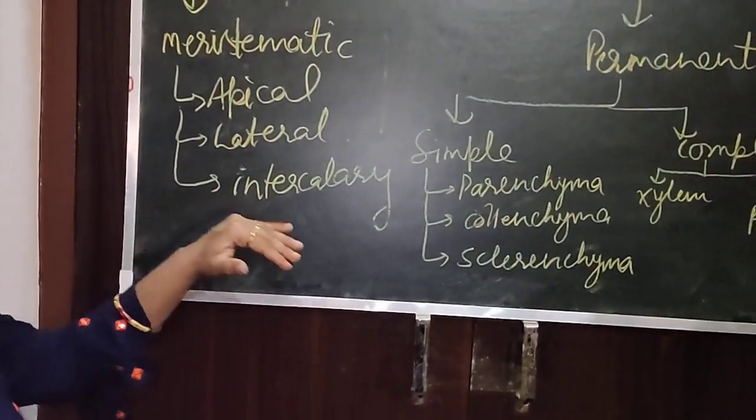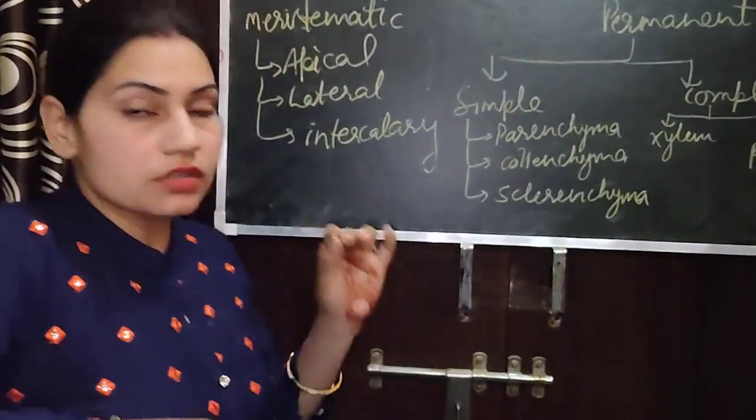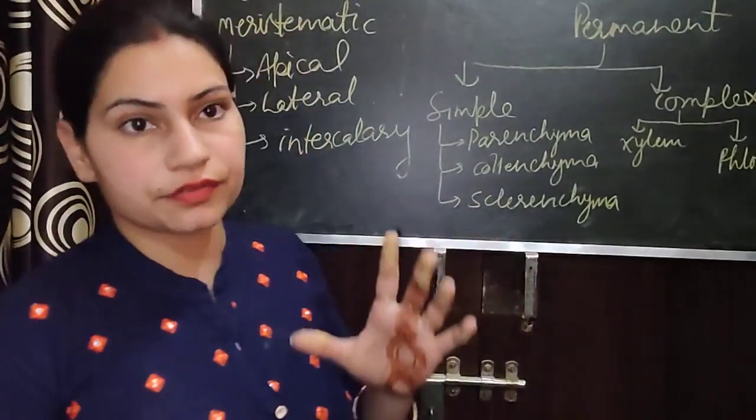Third is intercalary meristem. It is present at the base of node and inter-node regions of the plant. It also helps to increase the height of the plant.